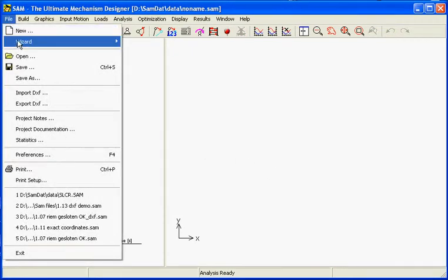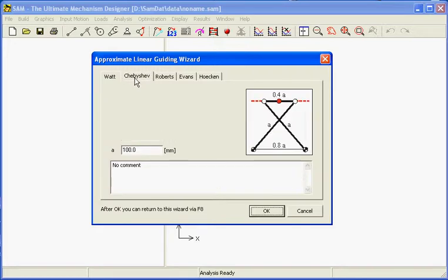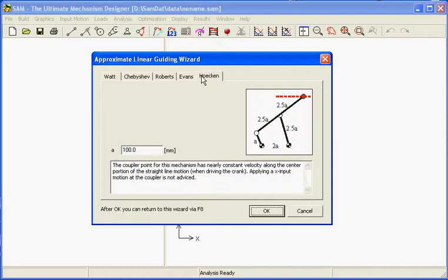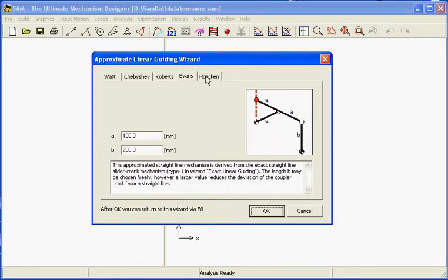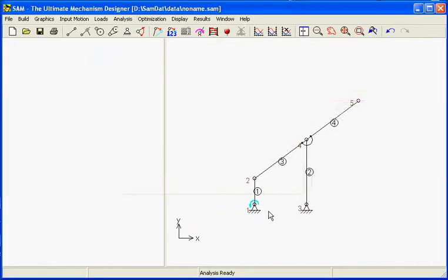One more example from the books is the approximate linear guiding. Five types are implemented in SAM, which are named after the well-known people who invented these mechanisms. We will take the hooken as an example.